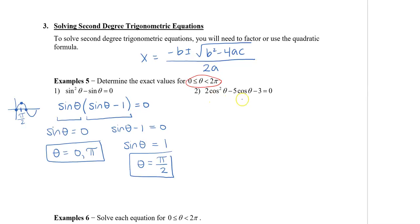Let's try a different one where we do have three terms: 2cos²θ − 5cosθ − 3. This one we can factor. I can see that 2 times negative 3 is negative 6, and I need to find two numbers that multiply to negative 6 and add to negative 5. So I'm going to open up two brackets and set this equal to 0.